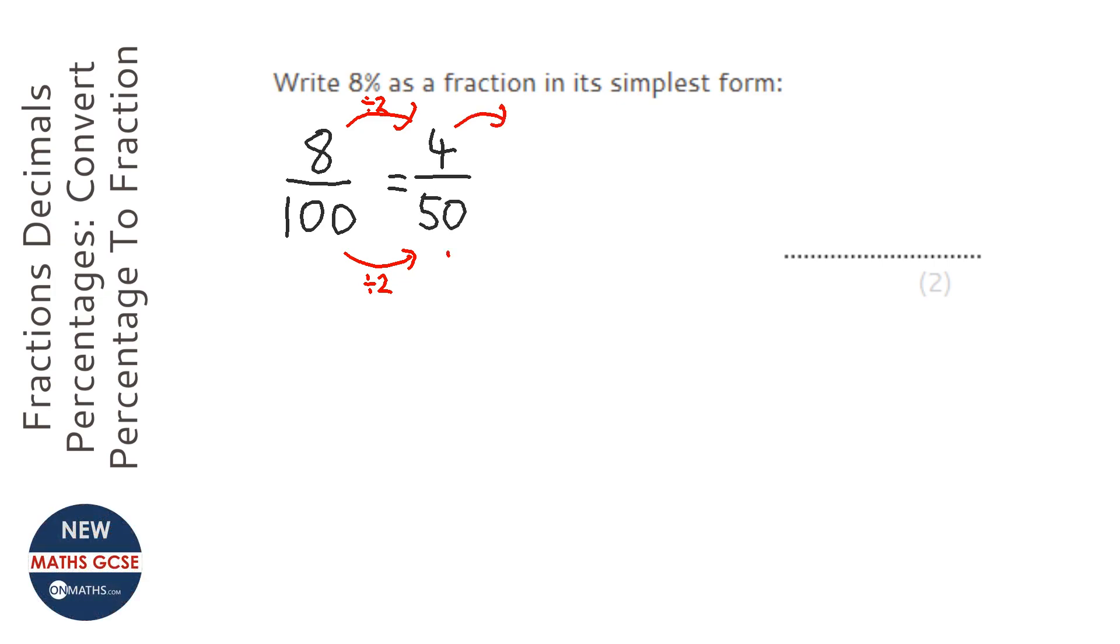Looking again, I can then halve that again, so I can divide those both by 2 again. And so that gives me 2 over 25.